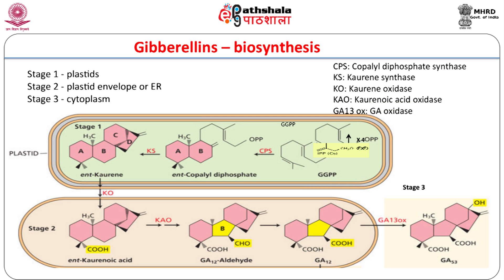Gibberellins are synthesized by the terpenoid biosynthesis pathway, in which larger molecules are built up by the 5-carbon compound isopentenyl diphosphate or IPP. Four units of IPP form the 20-carbon diterpenoid geranylgeranyl diphosphate (GGPP). The first committed step in gibberellin biosynthesis is the formation of ent-copalyl diphosphate from GGPP by the plastidic enzyme copalyl diphosphate synthase or CPS. This cyclized diterpene is further converted to the tetracyclic compound ent-kaurene by kaurene synthase (KS).